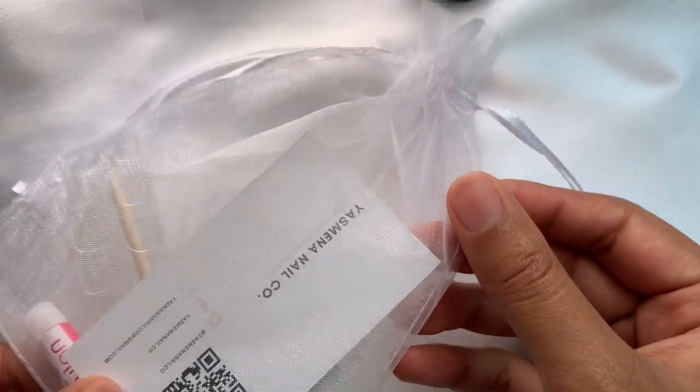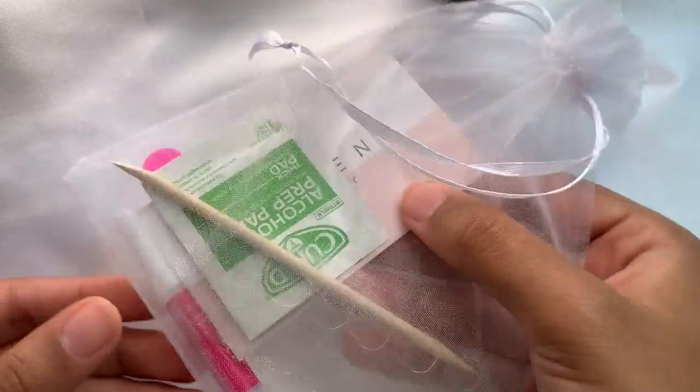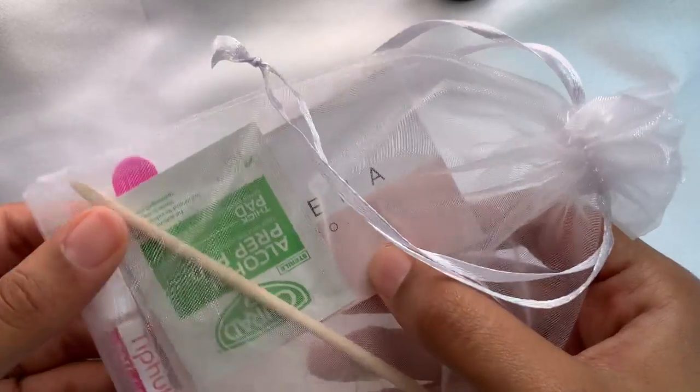If you order with my small business, this is the baggie that you're going to get. It has everything you need from the cuticle stick, the glue, adhesive tabs, nail file, and alcohol swab.